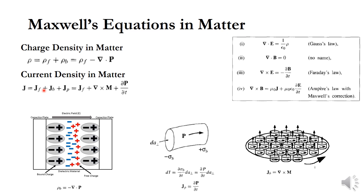The second component is the bound current density. When the material has magnetization, the net current density arises from the bound currents.